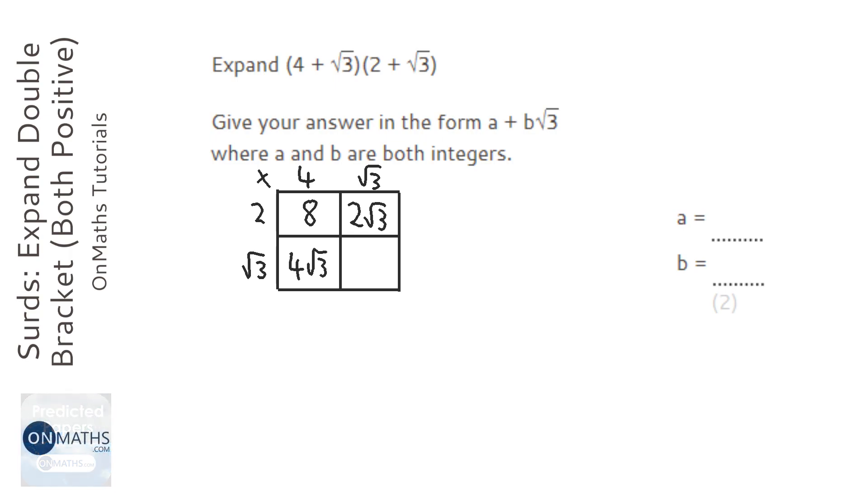Now root 3 times itself is just 3. If you think about it, root 3 times root 3 is root 9, and then root 9 is just 3.